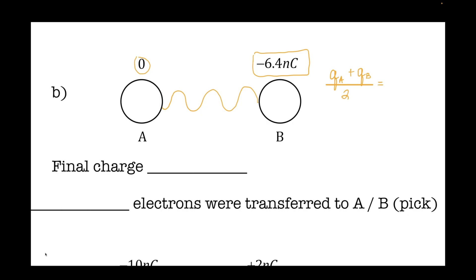For my example, I'm going to end up with negative 3.2 nanocoulombs. Electrons are going to stop moving as soon as the charge became negative 3.2 nanocoulombs on either one of those — negative 3.2 nanocoulombs on each. What was the change? How many electrons traveled?